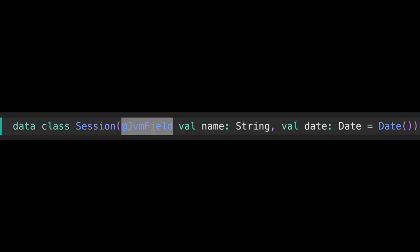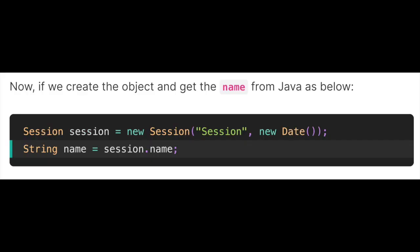Let's update our data class 'Session' like this. I have highlighted the @JvmField annotation added before the field 'name'. We use @JvmField over the field name to instruct the Kotlin compiler not to generate any getter or setter for it, and to expose it as a field. Now if we create the object and get the name from Java, we can simply write: String name = session.name. It will compile as expected, since the Kotlin compiler will not generate any getter or setter.